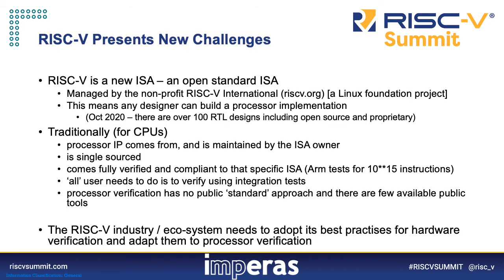RISC-V itself presents a lot of new challenges as well as opportunities. It's a new and open ISA managed by RISC-V International, which means any designer can build a processor implementation that conforms to the ISA. Traditionally, IP has tended to come from single sources whereby companies developed both the ISA and the RTL, and testing was done by those same vendors. ARM, for example, has something like 10 to the 15 instructions per ISA to ensure cores meet their specifications. This produces a real challenge for the RISC-V industry to achieve equivalent verification performance.